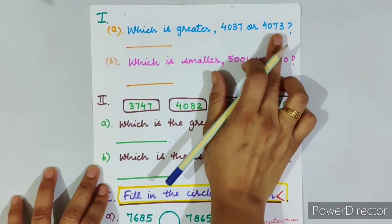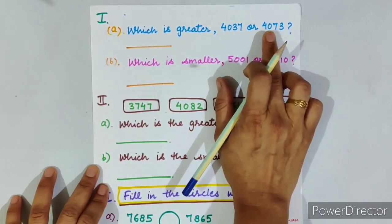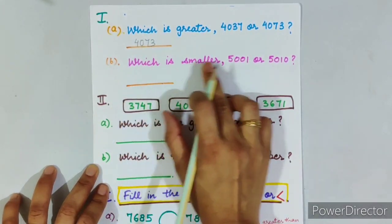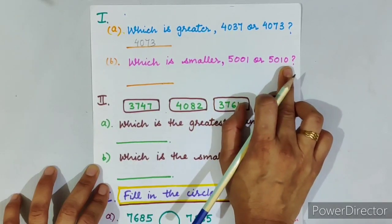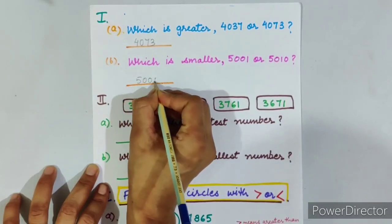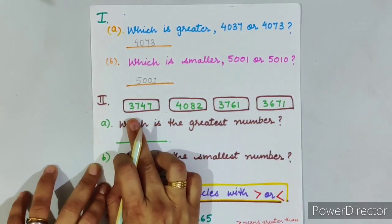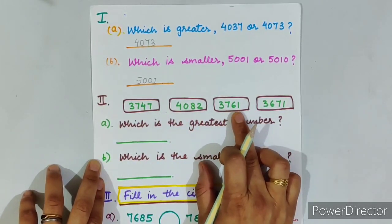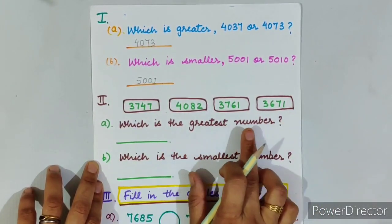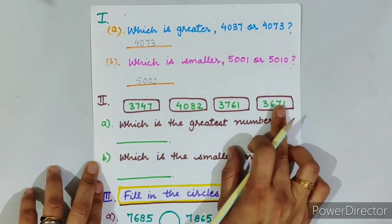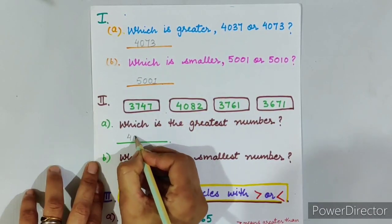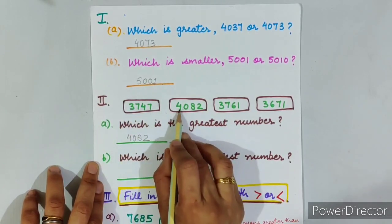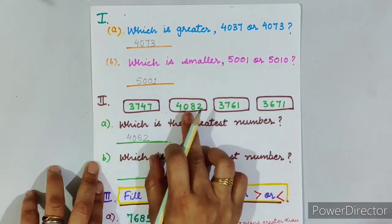Which is greater? Here we have two numbers: 4,037 and 4,073. So which one is greater? 4,073. Which is smaller? 5,001 or 5,010? 5,001 is the smaller number as it comes before 5,010. Here we have 4 groups of numbers: 3,747; 4,082; 3,761; 3,671. Which is the greatest number? The greatest number is 4,082, because all other numbers start with 3 at the thousands place, but this number starts with 4, and 4 is greater than 3.